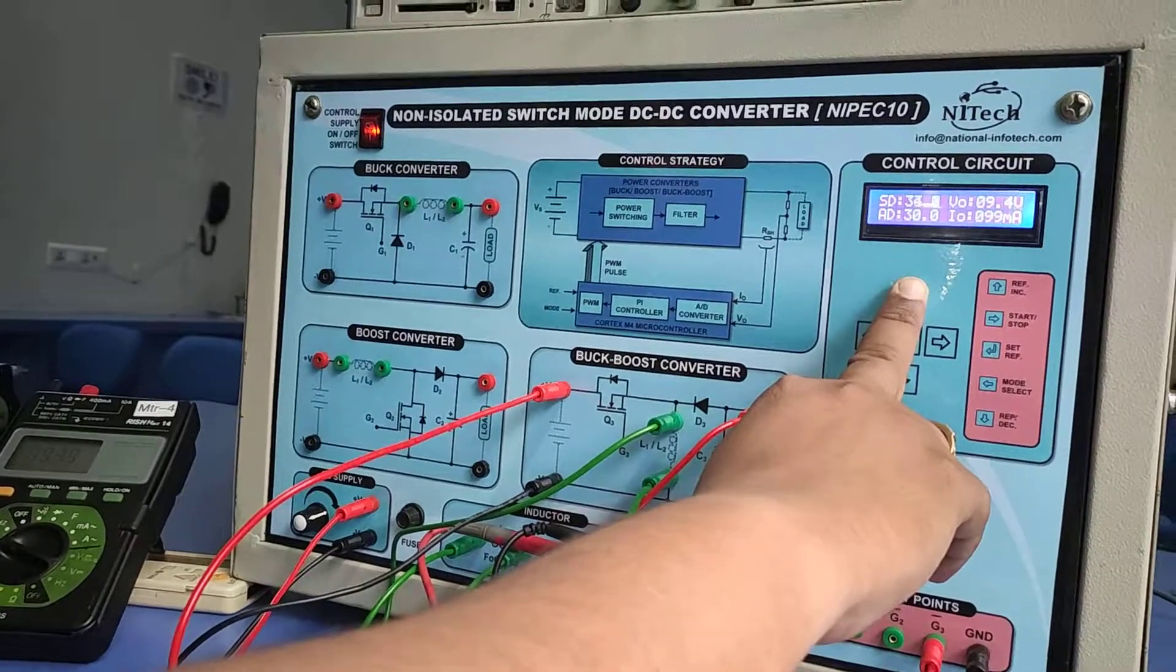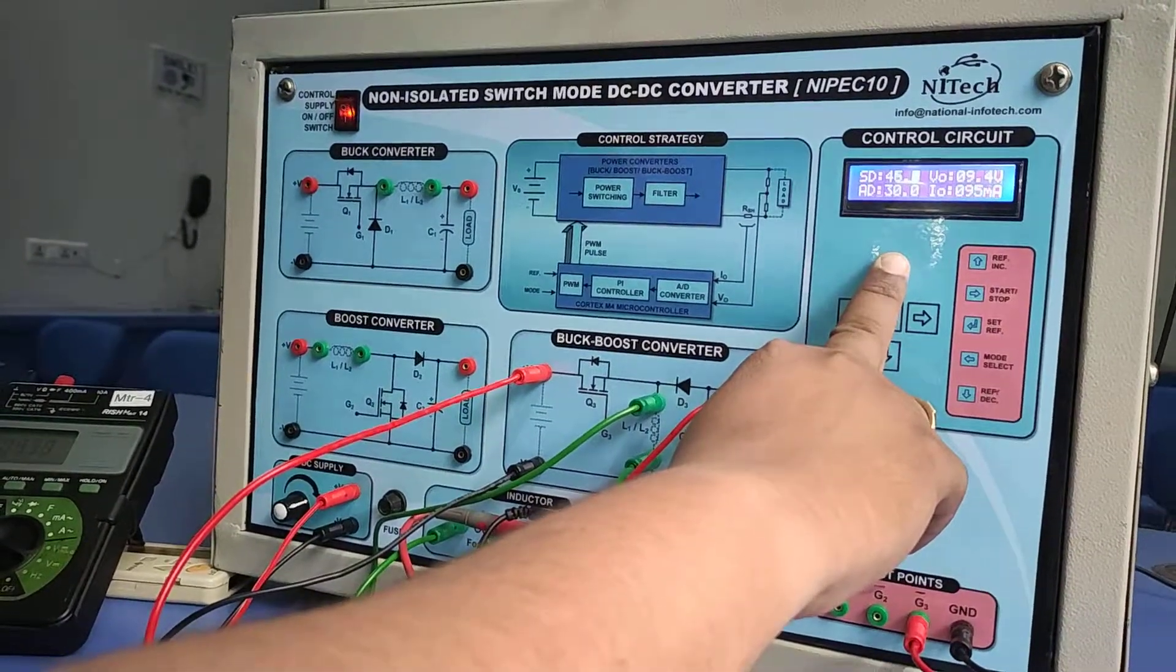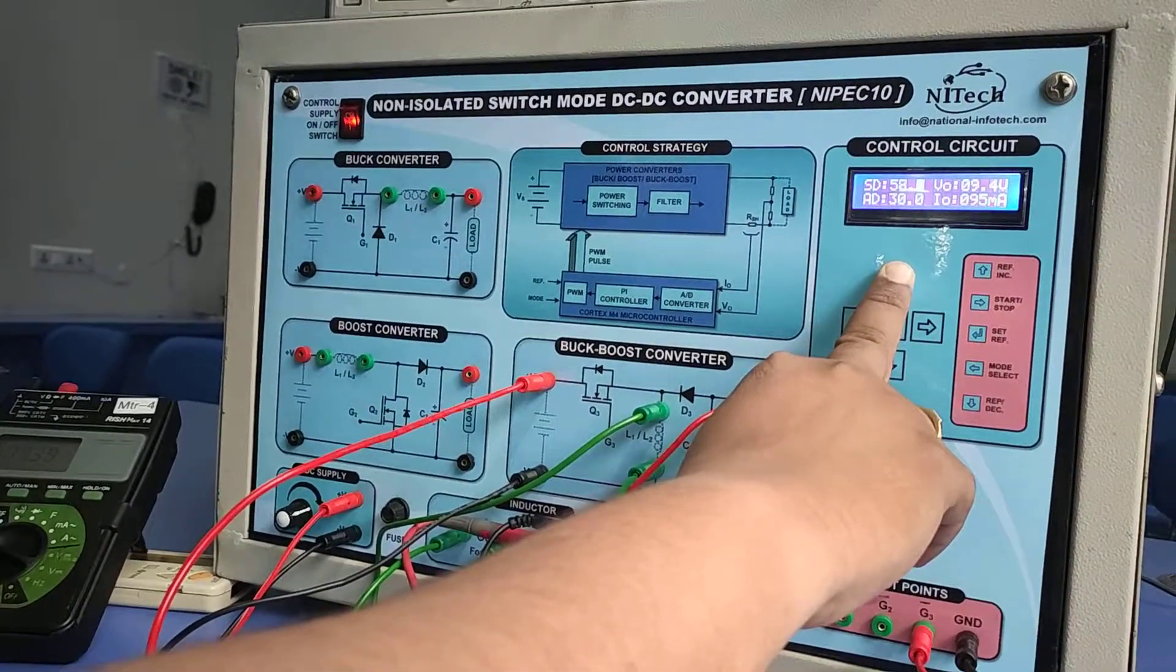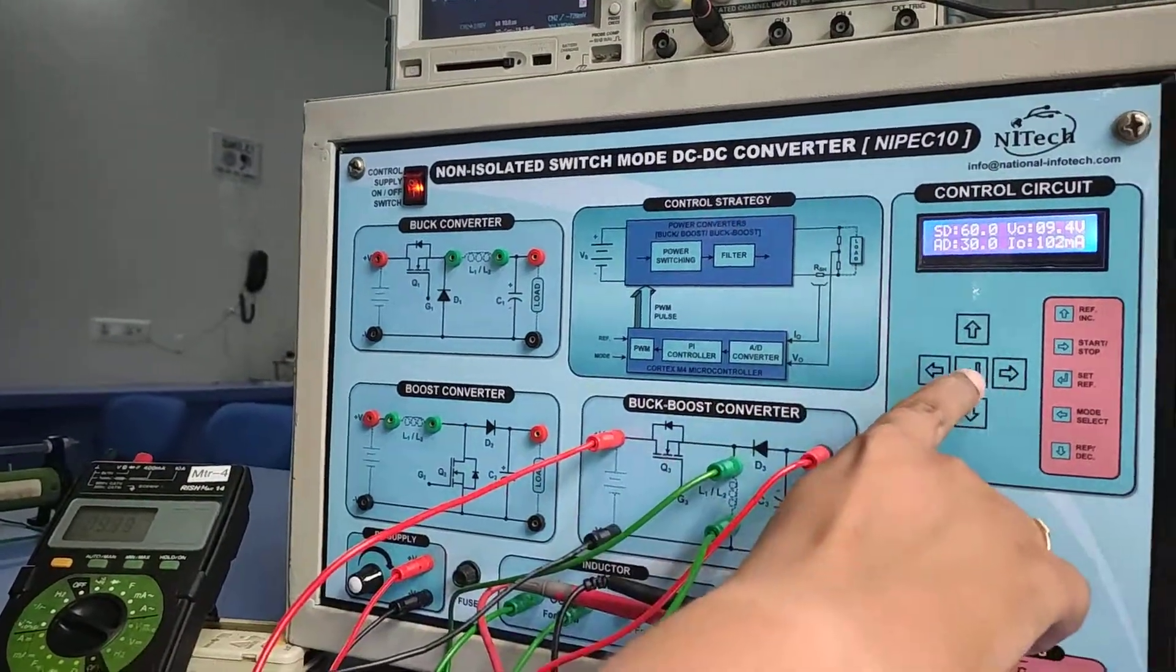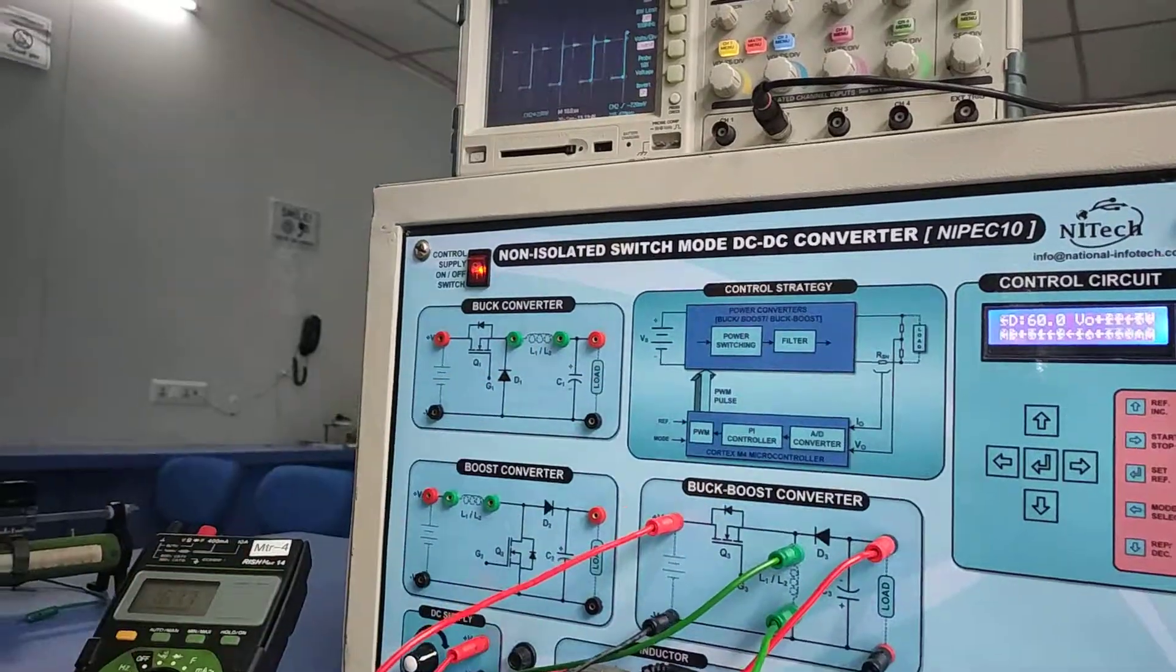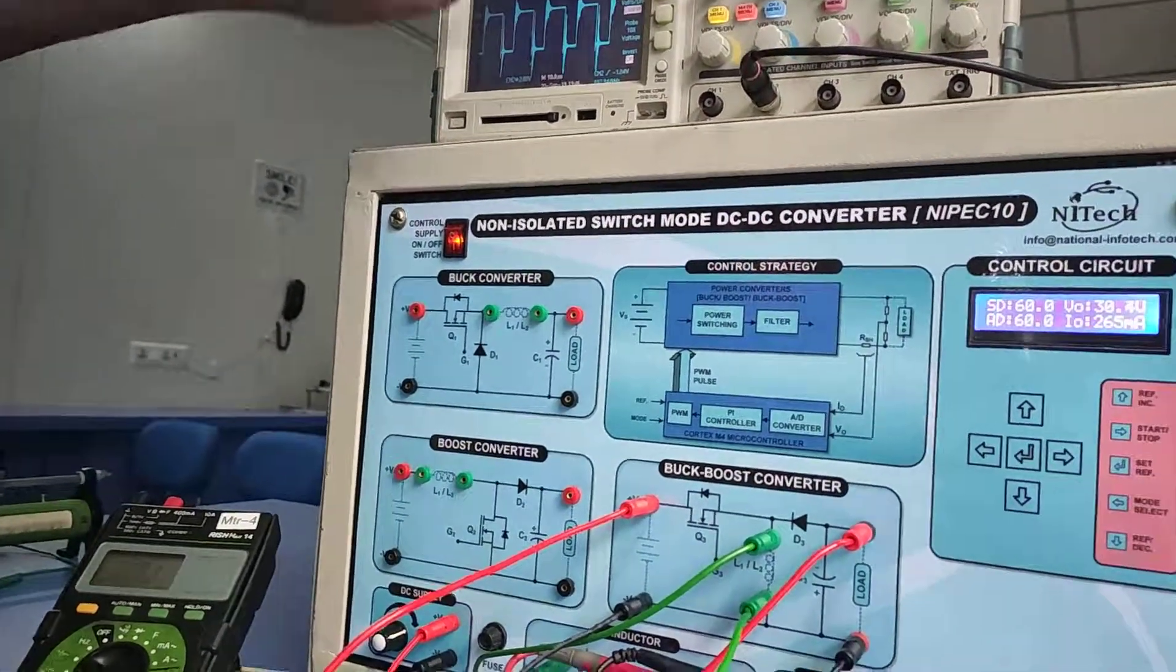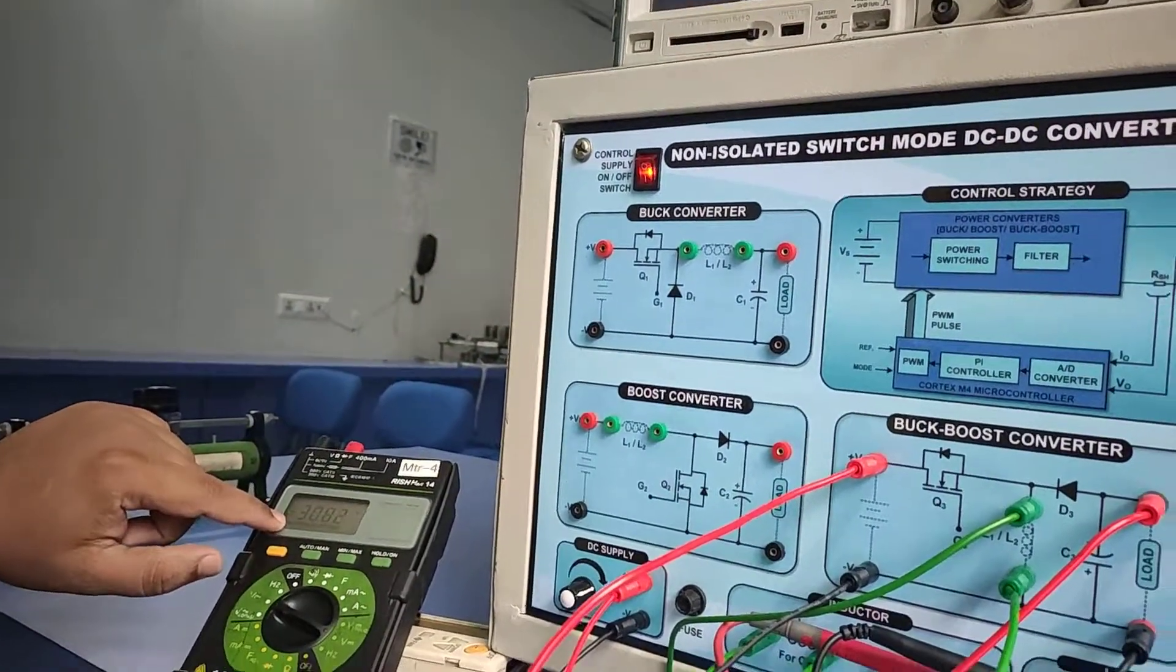Now I'm making the duty ratio above 50, approximately 60 percent, because the maximum limit for the buck-boost converter duty ratio is 60 percent. When I press enter, you can see on the DSO screen 60 percent turn-on period. As per theory, we will get 30 volt output in the buck-boost converter at 60 percent duty ratio.